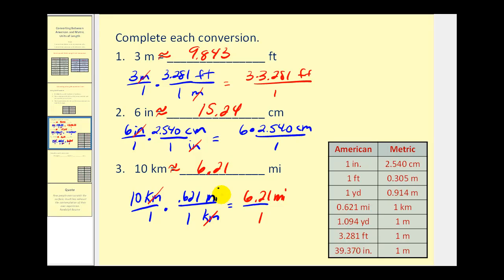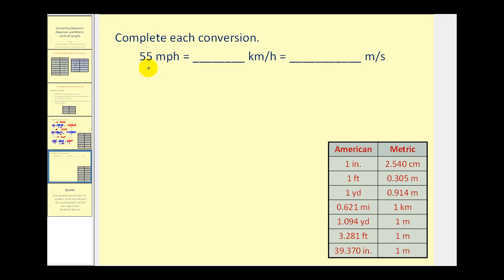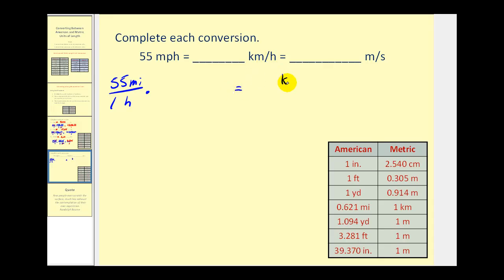Let's go ahead and take a look at one that's a little more involved. On this last problem, we want to convert fifty-five miles per hour into kilometers per hour, and then into meters per second. Remember that this is a rate that can be written as a ratio: fifty-five miles per hour would be fifty-five miles per one hour. Notice the first conversion will be to kilometers per hour. Our denominator is already in hours, so there's no conversion needed with time, but there is a conversion needed with the length.